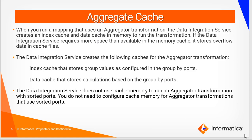Aggregate cache. When you configure an aggregator transformation in a mapping and run the mapping, the data integration service will create two caches: the index cache and the data cache. The index cache stores group values as configured in the group by ports, and the data cache stores calculations based on the group by ports. The data integration service will not use cache memory to run an aggregator transformation with sorted ports, so you need not configure cache memory for aggregator transformation that uses sorted ports.